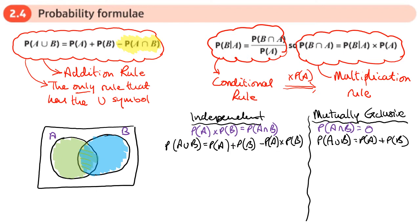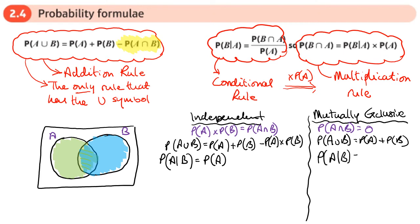Looking at the conditional probability rule when things are independent: the probability of A given B is just the probability of A. If things are mutually exclusive, because A and B can't happen at the same time, the probability of A given B becomes zero. So this is just extending these two rules to what we've already done with mutually exclusive and independent events.